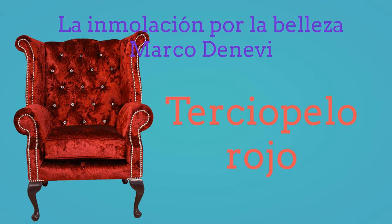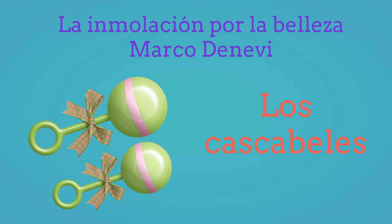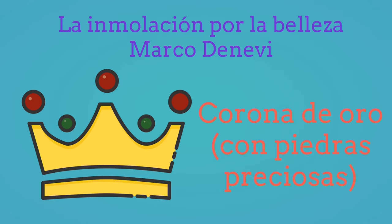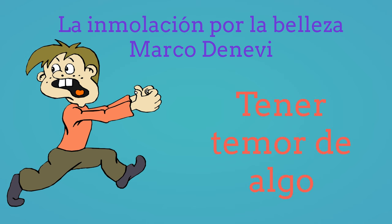La tela de este sillón es de terciopelo rojo. Esta es la imagen de unos cascabeles para niños pequeños. Esta es una corona de oro con piedras preciosas. Tener temor de algo es tener miedo de algo.